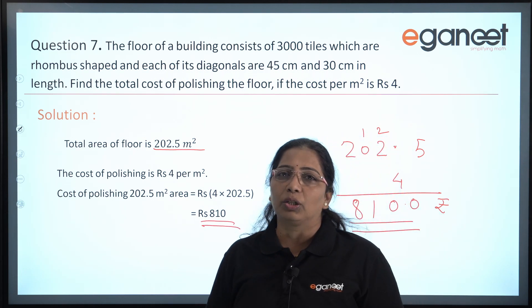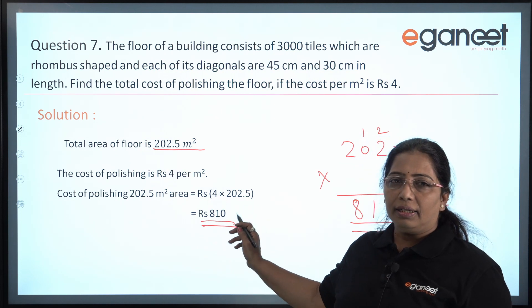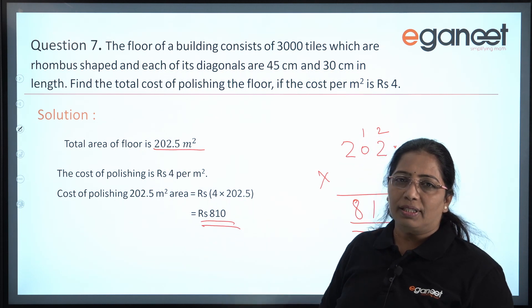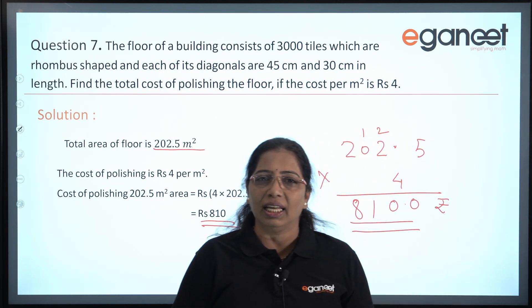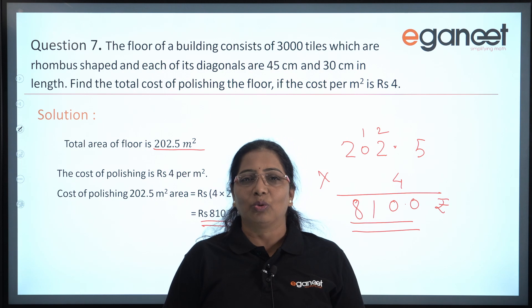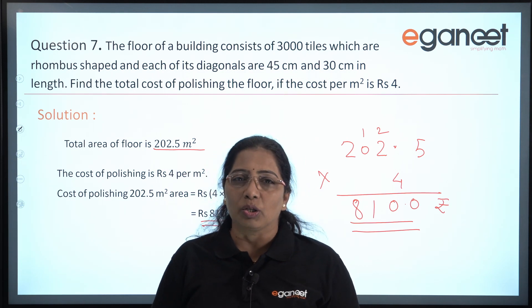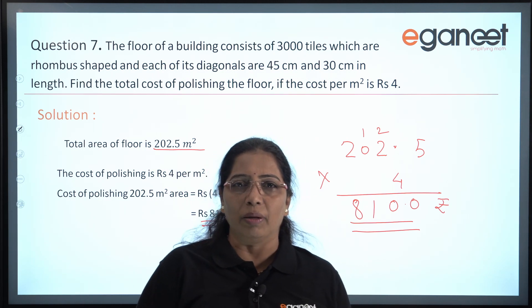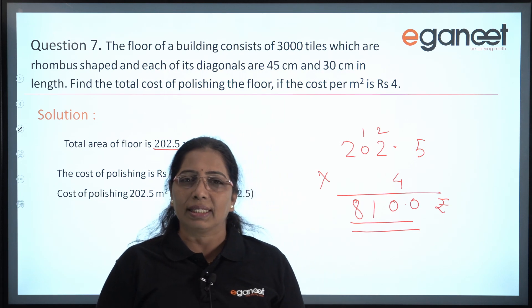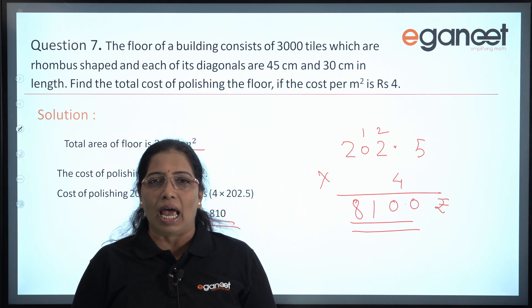So the cost of polishing the total floor is 810 rupees. You got the answer easily! To get solutions to such difficult problems, please like, share, and subscribe to our app eGanit.